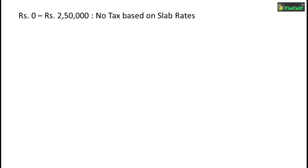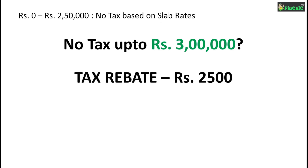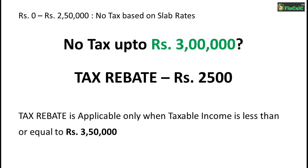Now let's see the trick I was talking about at the start of this video. We have a slab rate of 0% for income between Rs.0 to Rs.250,000 — so then how are we not supposed to pay any tax even if our income is Rs.3 lakhs? Here comes the important part: we have something called a tax rebate, which reduces our tax liability by Rs.2,500. So even if our income is Rs.3 lakhs, at the rate of 5% we are only supposed to pay Rs.2,500 as income tax. But since we have a maximum of Rs.2,500 as tax rebate, we need not have to pay any tax.